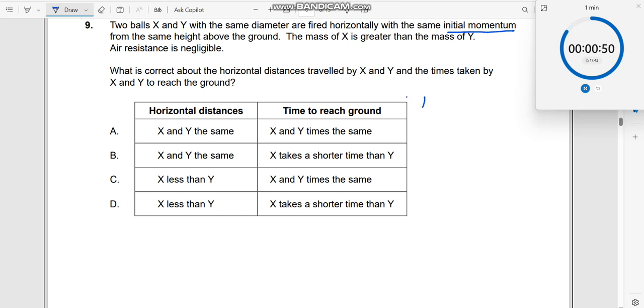What does it say? So I can now write Px is equal to Py, right. From the same height above the ground, the mass of X is greater than mass of Y, okay.